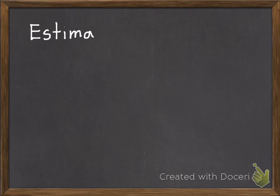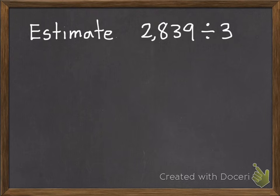Second practice problem. Same thing. Estimate 2,839 divided by 3 using compatible numbers. Go ahead and pause again.